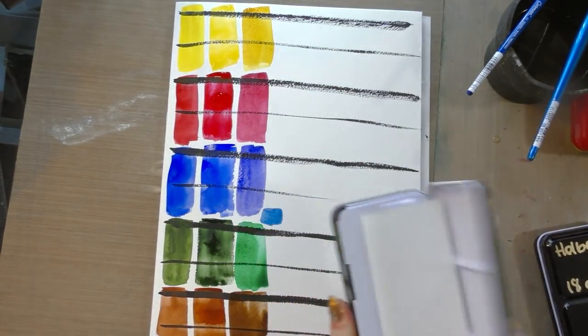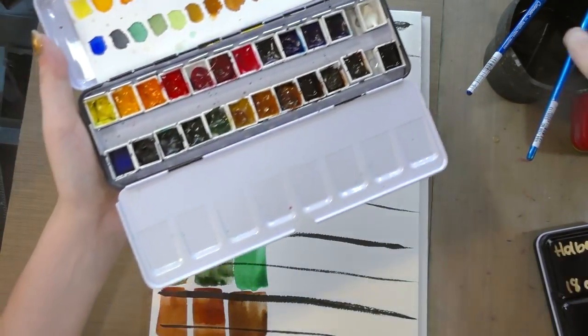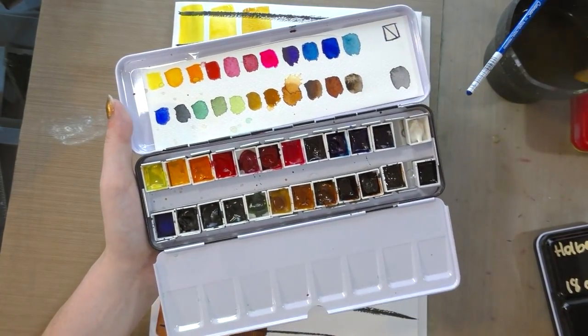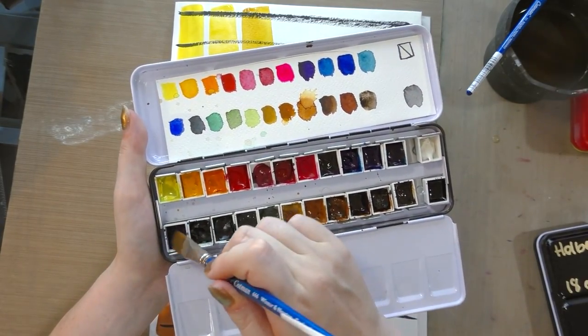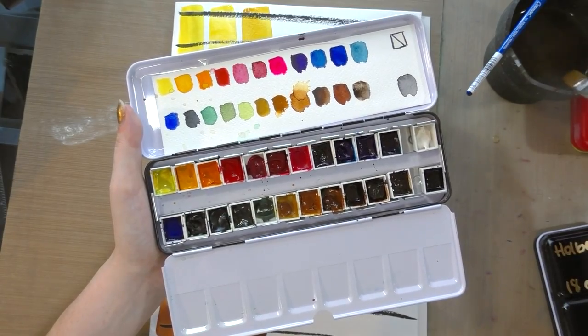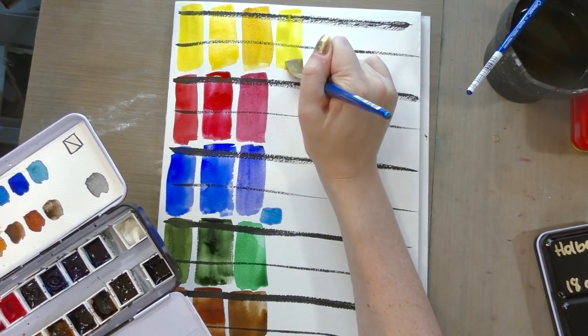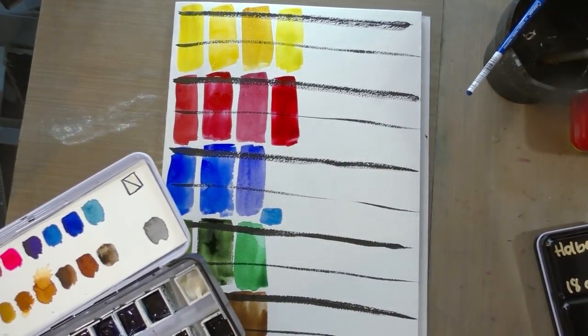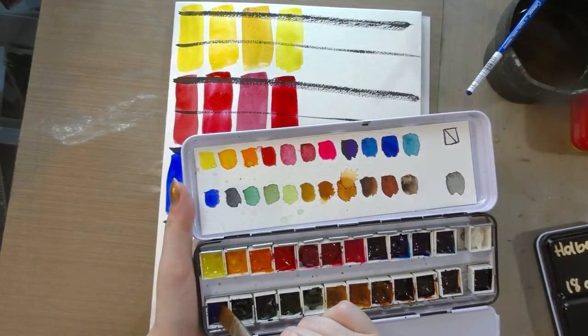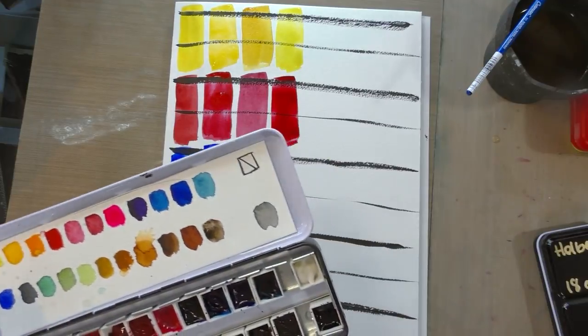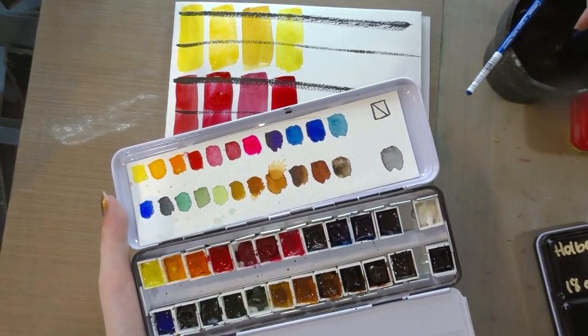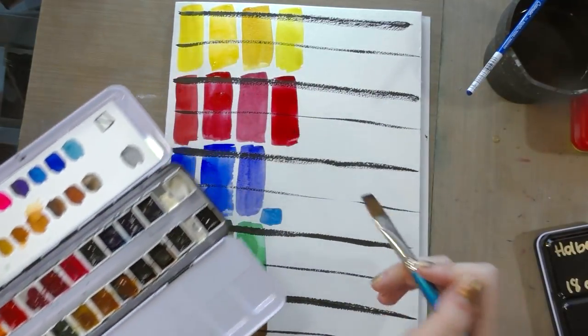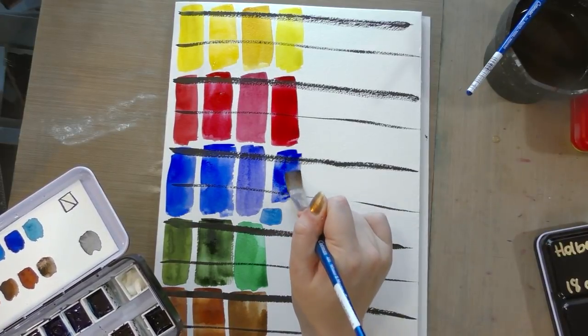Next is the Mijello Mission Gold. We're going to do the same thing. We're going to pre-wet the colors we're actually going to use. And I'm actually turning around to look at my original swatch to make sure I get the same colors. Although with these I didn't label the color names. I personally find, and this is probably not true for every artist, so take it with a grain of salt, but I find that working from half pans, I also tend to get more saturated colors that I can paint with more consistently than their tube counterparts.